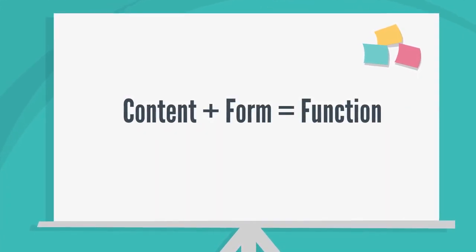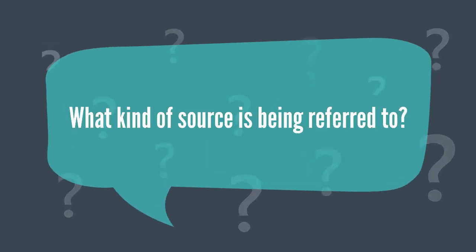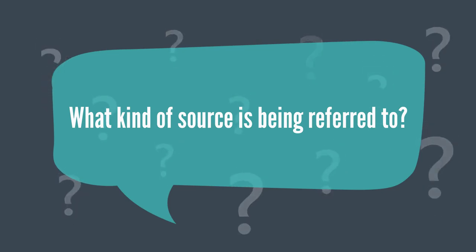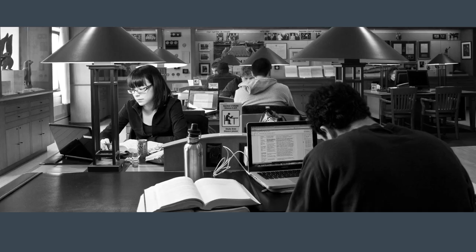In order to direct a researcher to the source cited, some basic information is required. First of all, you need to know what kind of source is being referred to. Is the author quoting a passage from a case or a textbook, or is it a section from a statute? The Brian Dixon Law Library is divided into different areas for books, periodicals, and statutes. Though many sources you use will be online, the citation should still be able to lead people to the print version if possible. You cannot possibly start to track down a source until you know what kind of source it is.